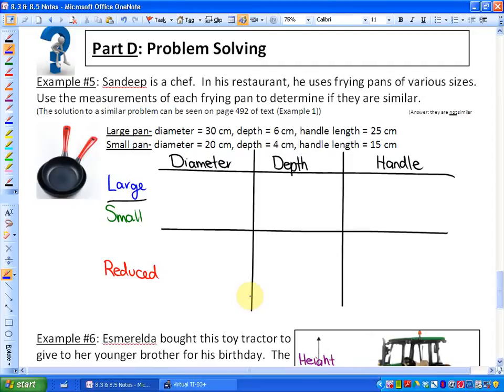Example number five: Sandeep is a chef. In his restaurant, he uses frying pans of various sizes. Use the measurements of each frying pan to determine if they are similar. The large pan has a diameter of 30, depth of 6, handle length of 25. The small pan has a diameter of 20, depth of 4, handle length of 15.